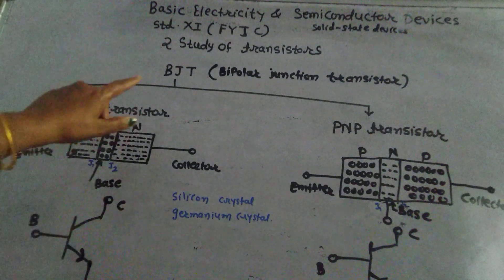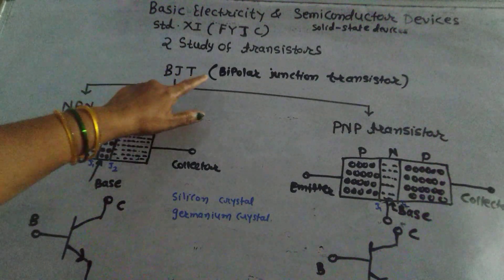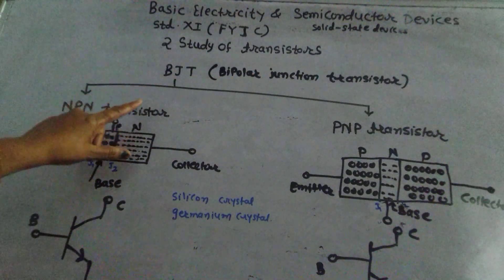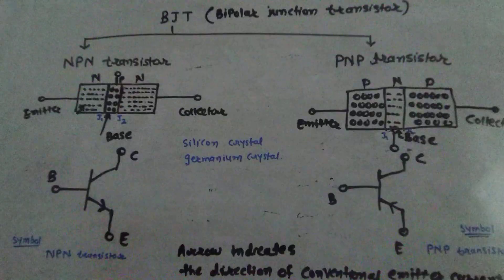There are two main types of transistors, BJT and FET, where BJT means bipolar junction transistor. There are two types of BJT transistor: NPN transistor and PNP transistor.